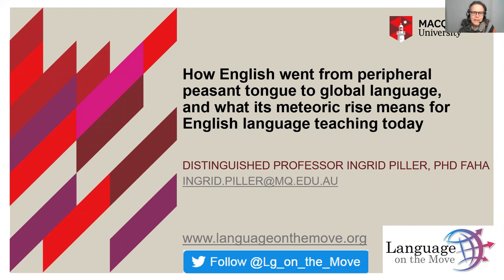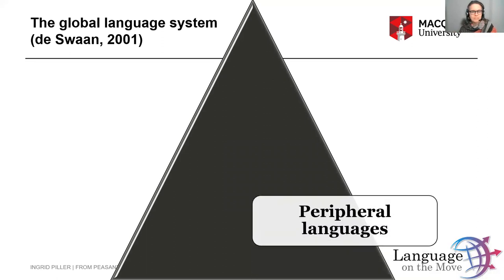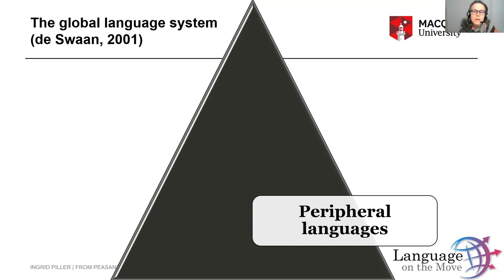Let's start by exploring the global language system. I'm drawing here on the work of Dutch sociologist Abrams de Swann who in 2001 conceived of the global language system as a pyramid. By the global language system he refers to those 6,000 to 7,000 languages in the world, of which the vast majority — in the order of 99% — are peripheral languages. By peripheral languages he means they are small languages, spoken only by a small number of people, typically oral languages.